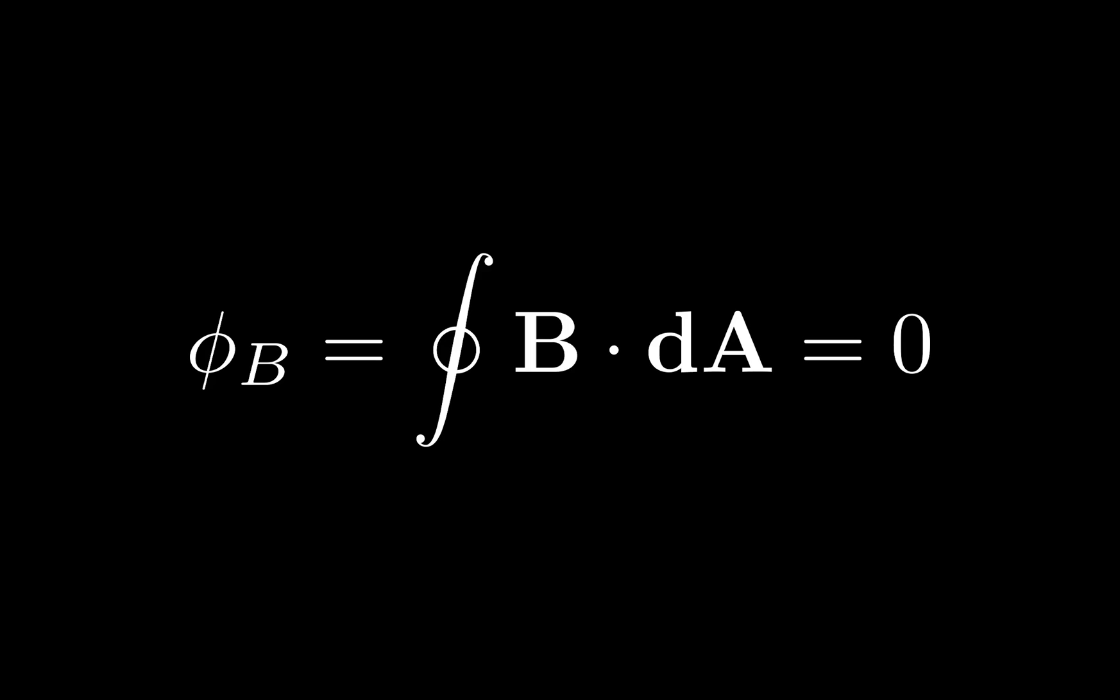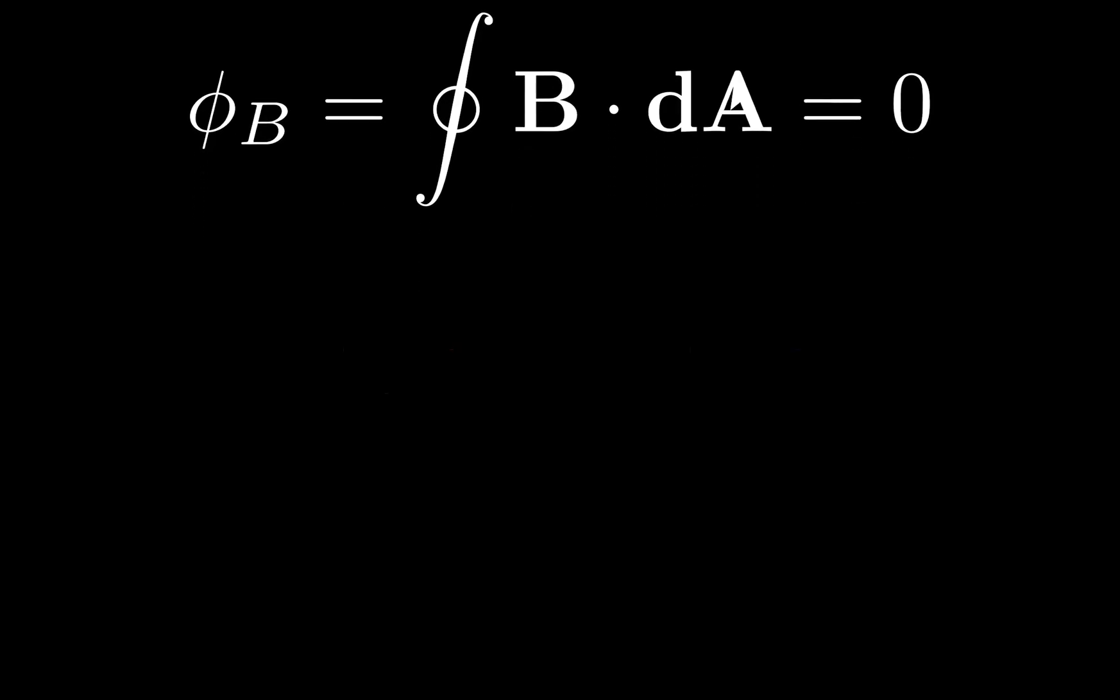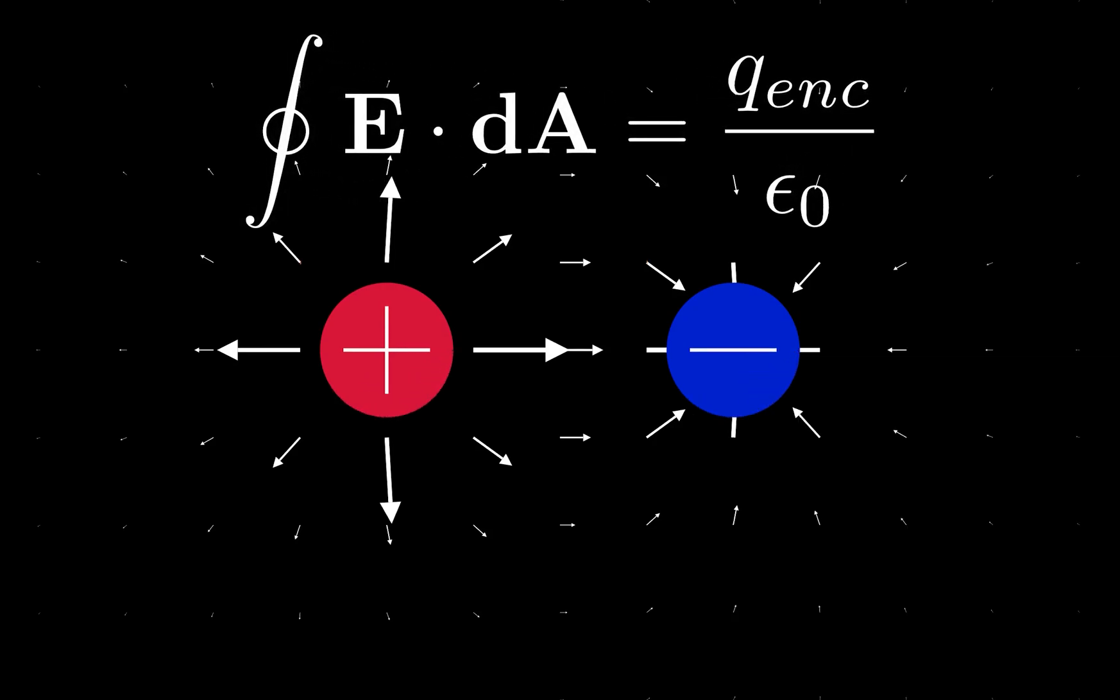This illustrates a crucial difference between electricity and magnetism. In electric fields, we can trap charges inside surfaces by measuring the flux of a field through those surfaces, which we discussed in the last video. Not so for magnetism.